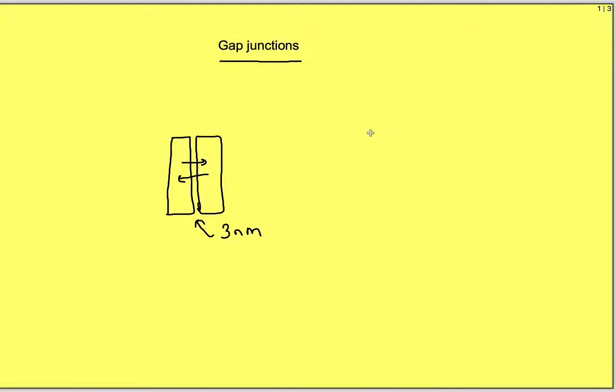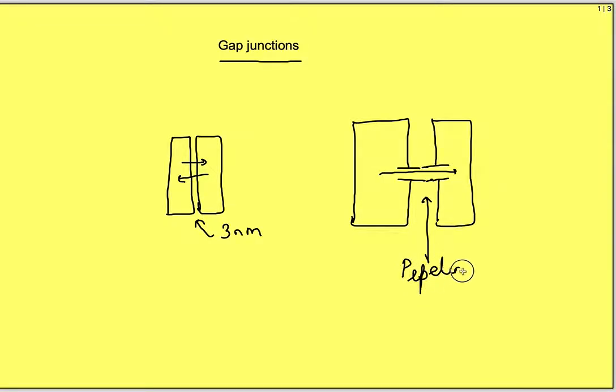If we magnify the area we find that there are certain channels present on the membrane of the cells and channels on the membrane of both cells combine together. Channels of one cell are opposed with the channels of other cell forming a pipeline through which substances can pass between the cells.